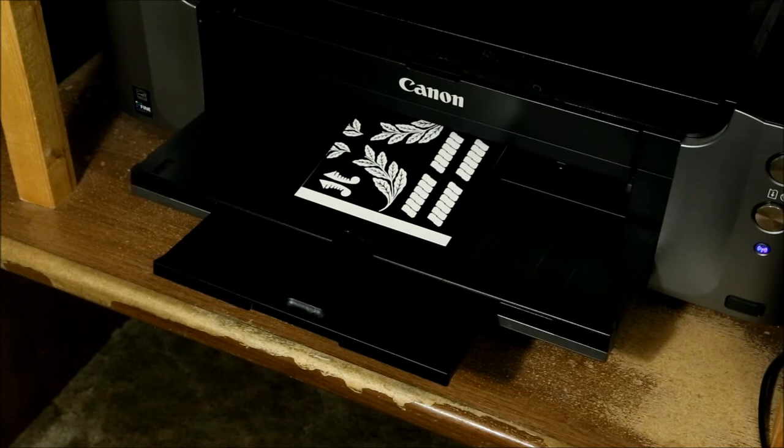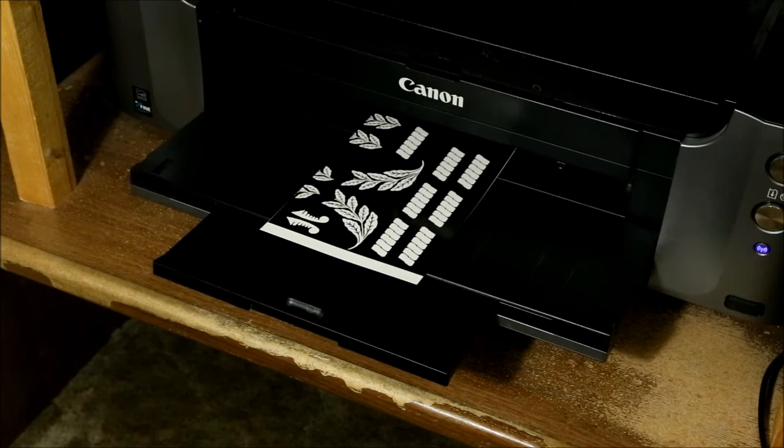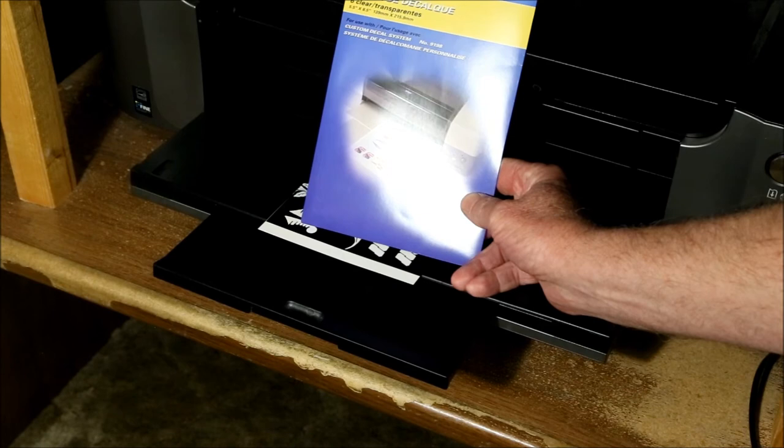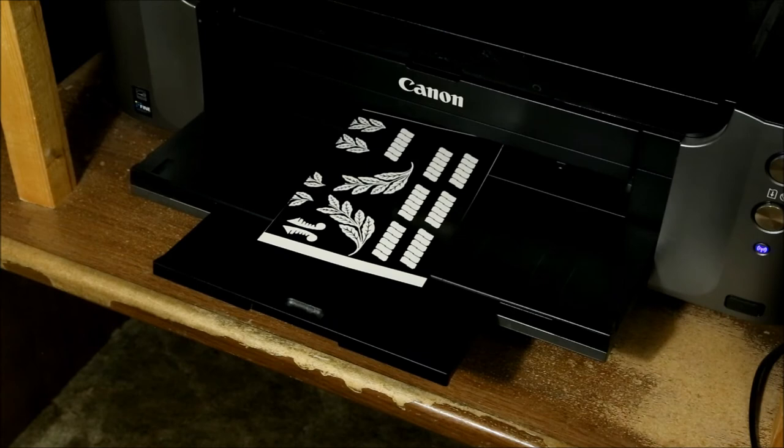And here we go. This first sheet contains some of the other decals needed for this restoration. I've had good luck with Testers Clear Waterslide Decal Paper, but other brands may work just as well. After letting the sheet dry for several minutes, I spray it with a clear coat such as Design Master Clear Gloss Finish. Spray just enough to create a smooth, even, glossy finish. You don't want big puddles. After that, I let it dry at least two full days to fully cure.